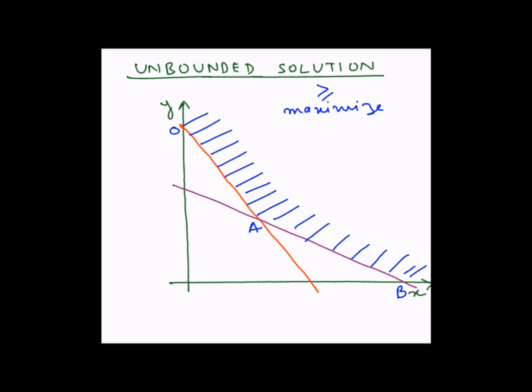Now for this solution, we'll try to draw a family of objective function lines parallel to each other. So we'll start from the origin and try to move farther from the origin till a point when one of these lines touches the farthest point of the feasible solution region.